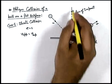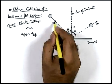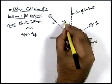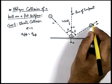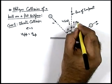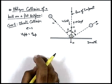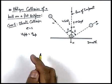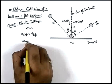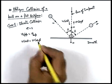Along the line of impact, the approach velocity of the ball would be u cos theta, and the separation velocity will be v cos phi, where u and v are the initial and final velocities. So we can state that u cos theta must be equal to v cos phi, as the collision is elastic.